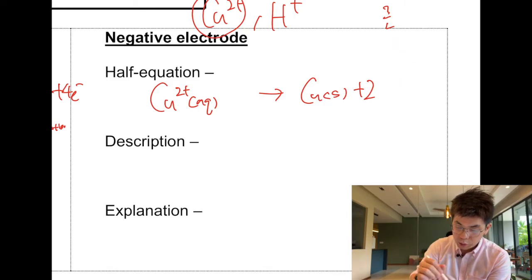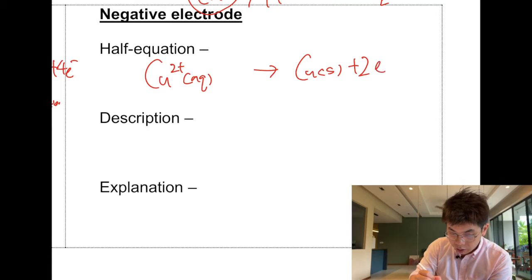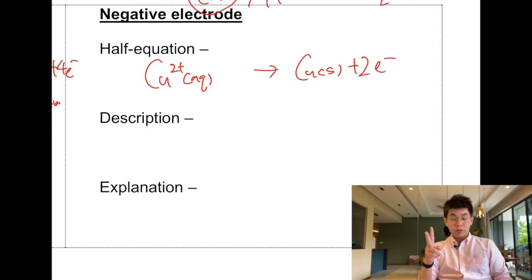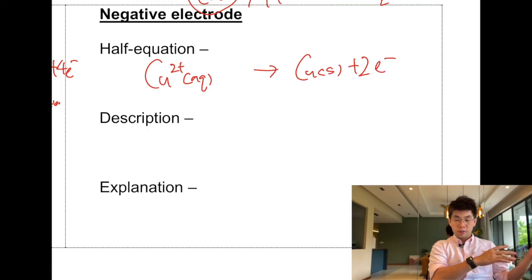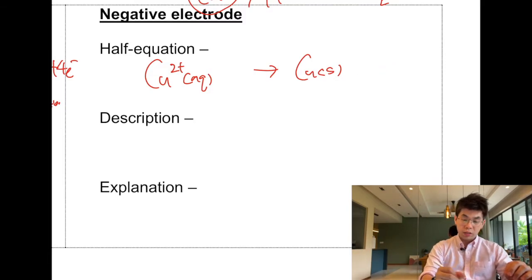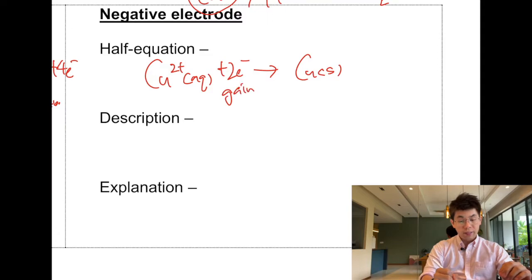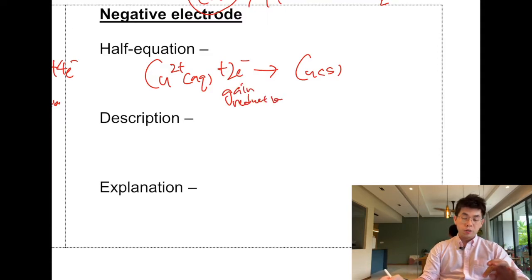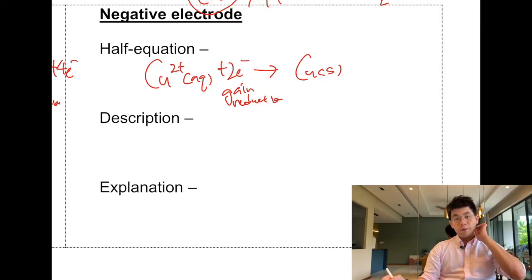I will balance this equation by putting two electrons: Cu²⁺ + 2e⁻ → Cu. Because there's a 2+ on this side, I gain two electrons. This is a reduction. This is something new — copper 2+ ions from the solution form copper metal.